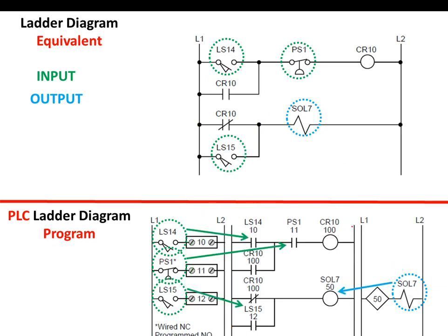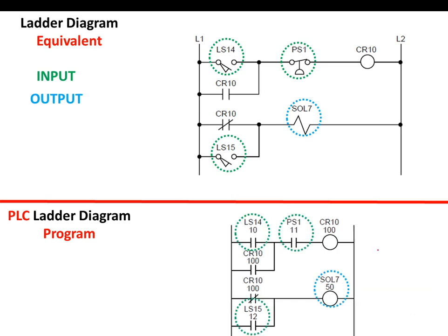However, it is important to know that although we have taken out all the actual inputs and outputs, we still represent them with their equivalent variables. For each input there must be a corresponding variable or name in the PLC ladder diagram. Similarly, for each output there must be a corresponding variable that represents it. This is what makes the PLC ladder diagram purely software.